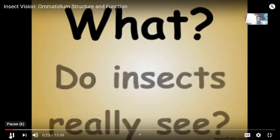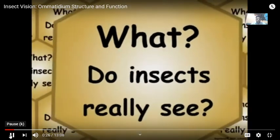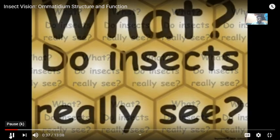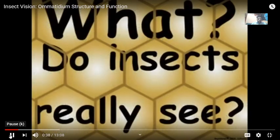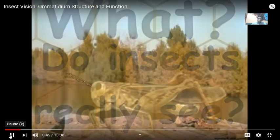Do insects really see? Since the compound eyes of insects are comprised of a mosaic of small facets, the popular media likes to represent insect mosaic vision like this. However, insects actually see this. Let us examine the structure of the insect compound eye and learn how the compound eyes visualize the landscape for insects.